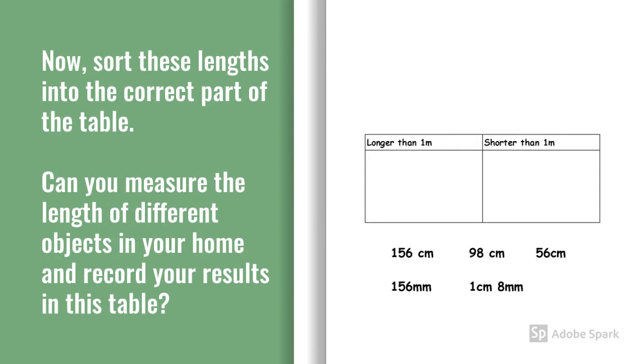Now sort these lengths into the correct part of the table. So working out from the measurements listed which ones are longer than one meter, which are shorter than one meter. Once you've done that can you measure the length of different objects or people in your home and record your results accurately in this table using the correct length measurement.